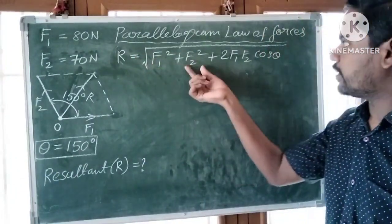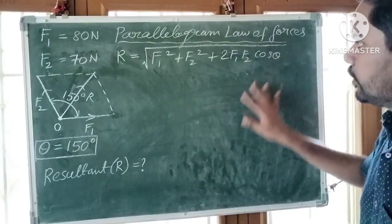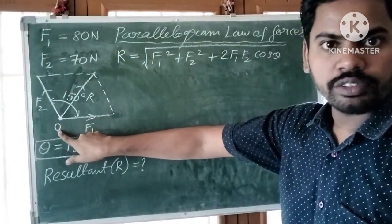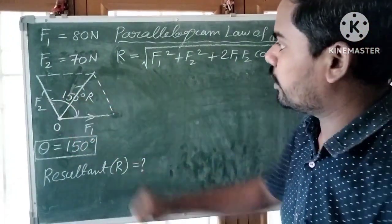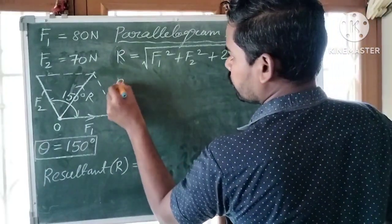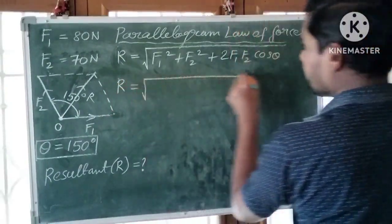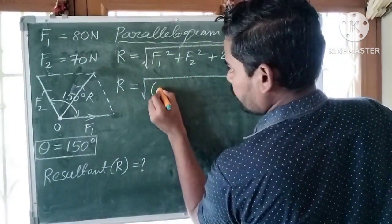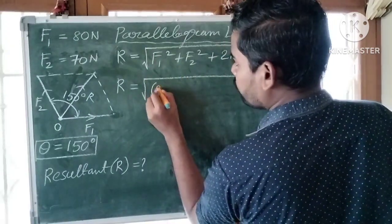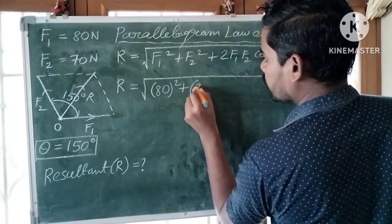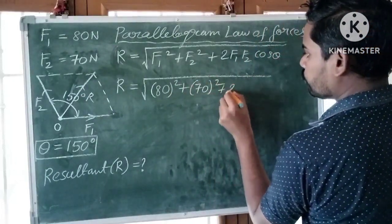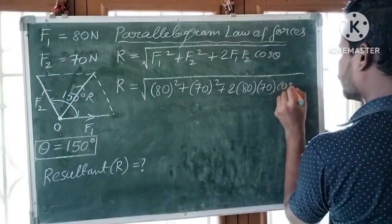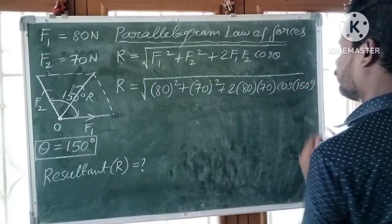Here F1 and F2 are forces acting at point O, and theta means angle between F1 and F2. By plugging all the values, F1 is 80 square plus F2 70 whole square plus 2F1, 80, F2, 70 into cos 150 degrees.